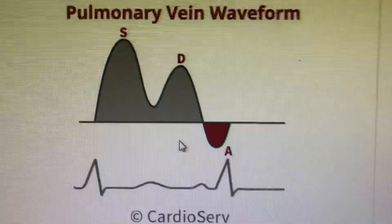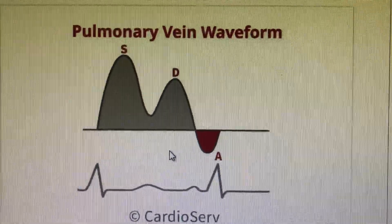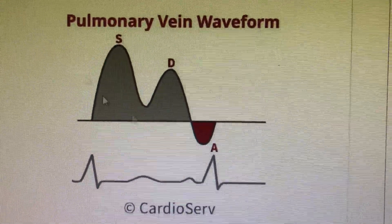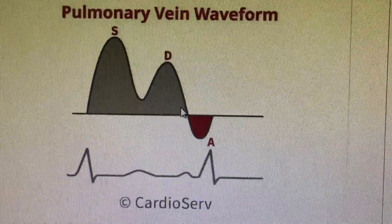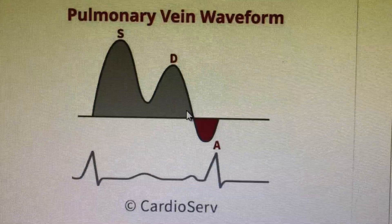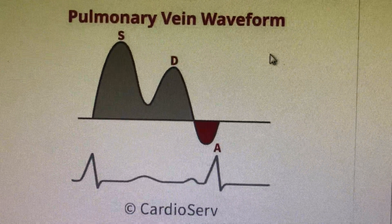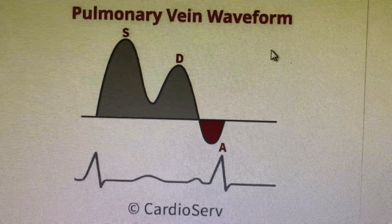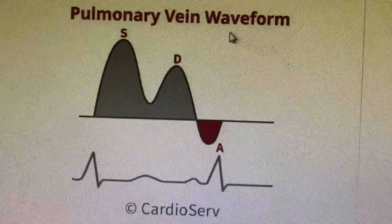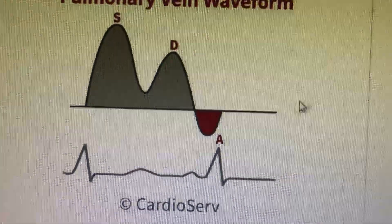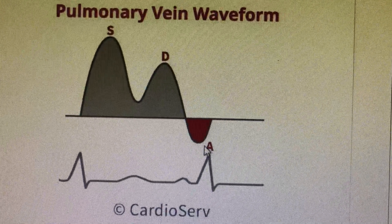Another important parameter in the calculation of diastolic dysfunction is the pulmonary vein waveform, or pulmonary venous flow into the left atrium. It will be in coherence with the mitral valve inflow. We place the Doppler cursor on one of the pulmonary veins, either the posterior or the lateral pulmonary veins. Usually a systolic wave, a diastolic wave, and an AR wave will be present.